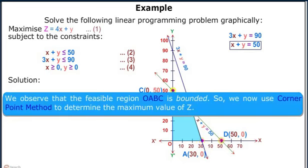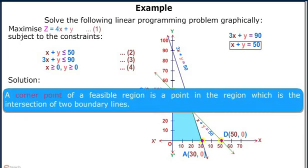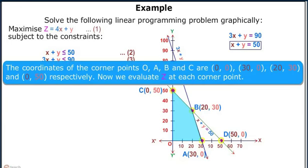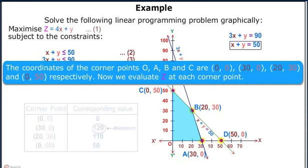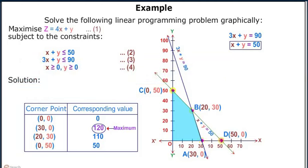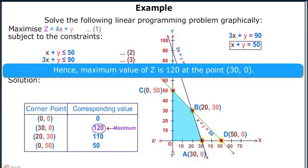The feasible region OABC is bounded, so we use the corner point method to determine the maximum value of z. A corner point of a feasible region is a point at the intersection of two boundary lines. The coordinates of the corner points O, A, B, and C are (0, 0), (30, 0), (20, 30), and (0, 50) respectively. Evaluating z at each corner point, we see that the maximum value of z, which is 120, occurs at the point (30, 0).